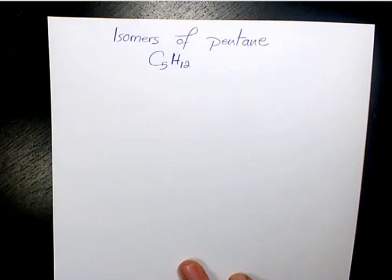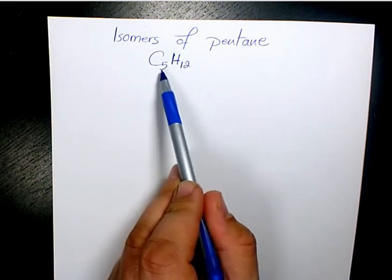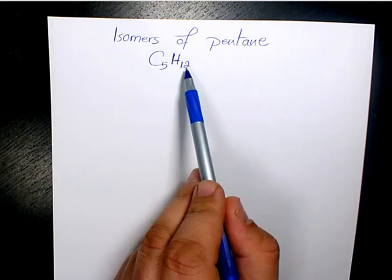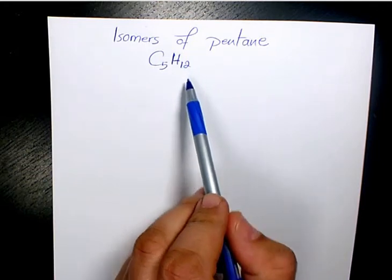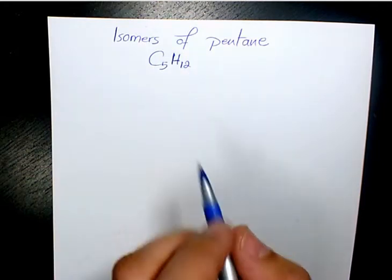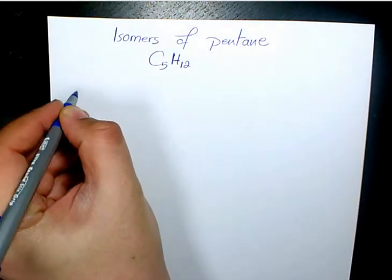What's up guys, this is Massey, welcome to another video. In this video I want to show you what are the isomers of pentane. Pentane has the chemical formula C5H12, so you have five carbon atoms and 12 hydrogen atoms. In total we have three different isomers and I'm gonna write all of them in here.